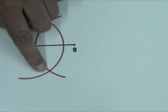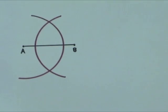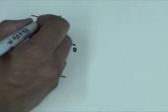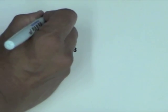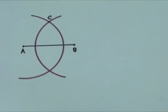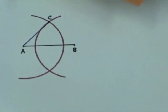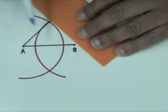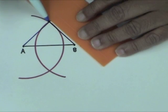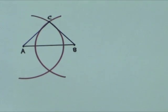There are two points of intersection. Label one of the points of intersection as C. Join A to C and B to C to complete triangle ABC.